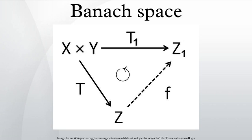When two compact Hausdorff spaces K₁ and K₂ are homeomorphic, C(K₁) and C(K₂) are isometric. Conversely, when K₁ is not homeomorphic to K₂, the Banach–Mazur distance between C(K₁) and C(K₂) must be greater than or equal to 2, by results of Amir and Cambern.